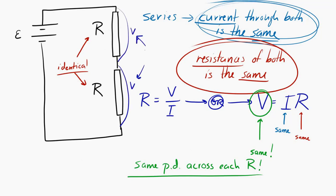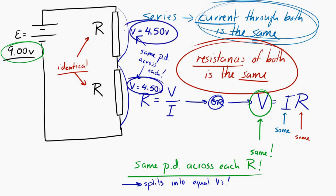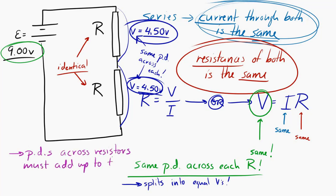Let's put some numbers in. Let's say the EMF provided by the battery is 9 volts. The circuit will split up the potential difference into two equal parts across both resistors, so one resistor will have 4.5 volts across it and the other will also have 4.5 volts. The potential difference across the two resistors has to add up to the EMF provided by the battery.